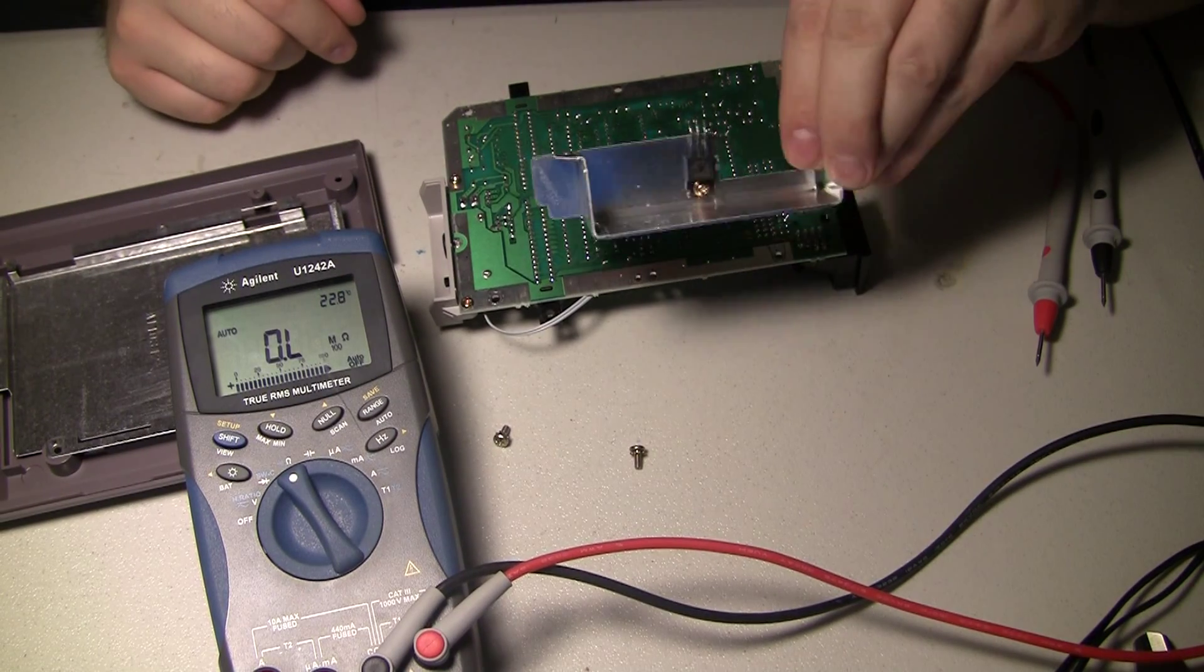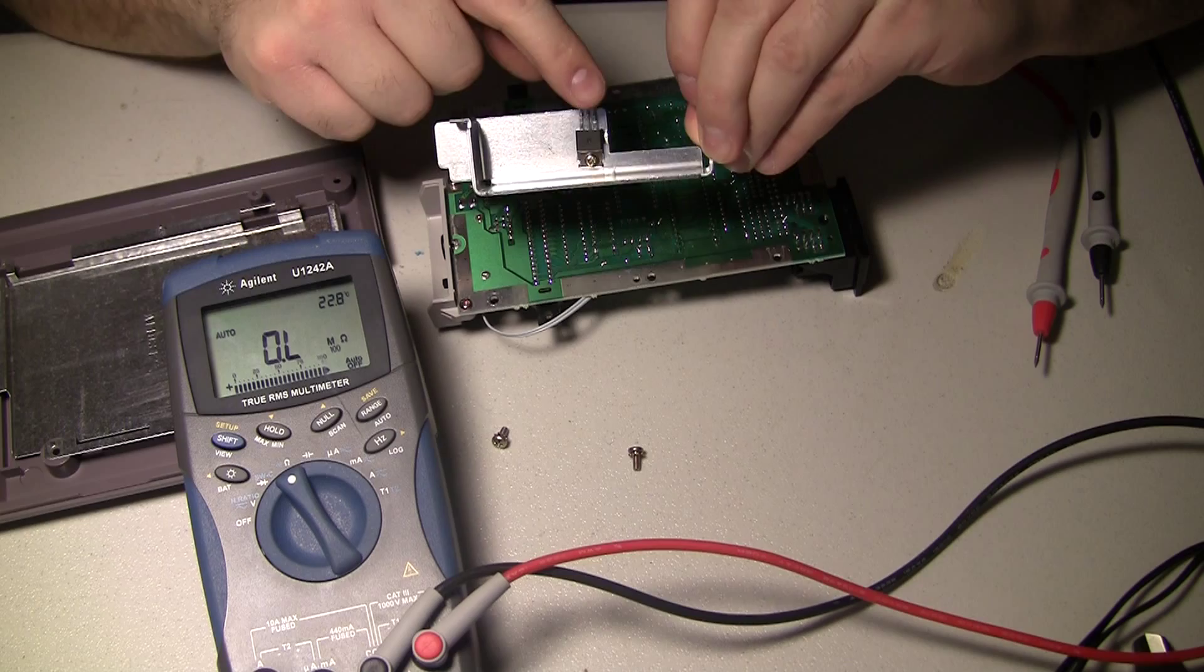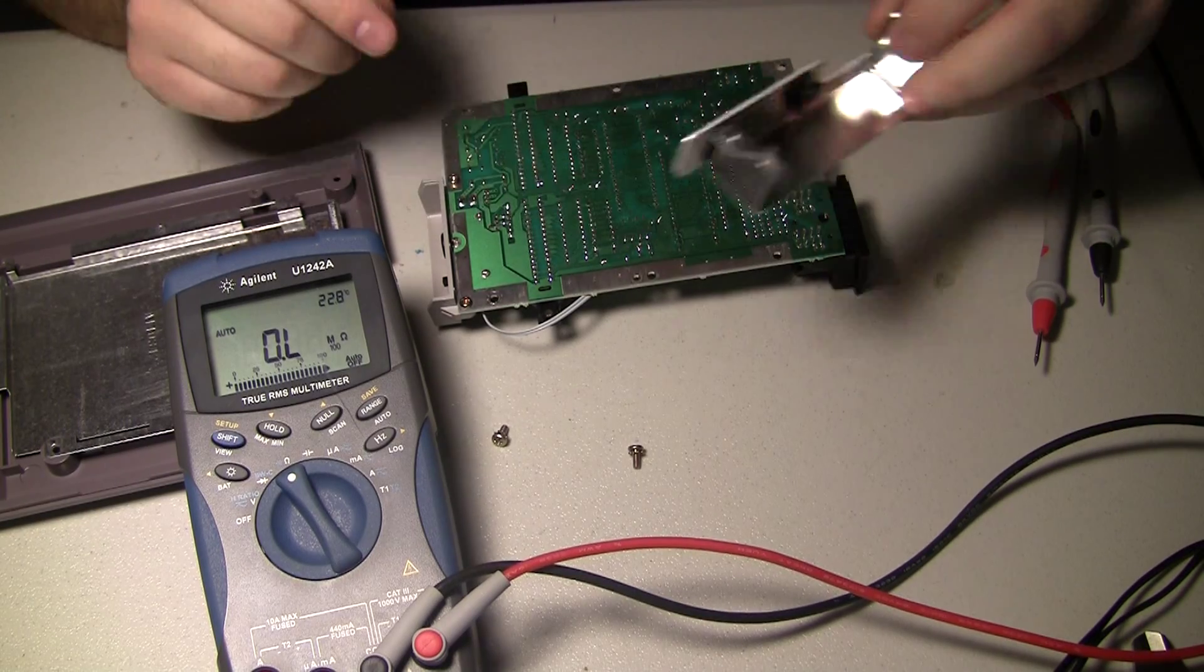I also took out the regulator just because I could get it done real quick. Two screws, desolder three pins, yank it out—made no difference.